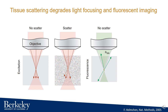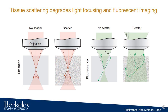Another example is fluorescence imaging. In this case, the light source becomes the fluorescent molecules inside of the tissue. If there is no tissue scattering, fluorescence emitted from these molecules can be collected efficiently by the objective lens. However, when the fluorescent molecules are inside of a scattering tissue, fluorescent light is scattered and cannot be collected as efficiently, so the signal-to-noise ratio of the fluorescence image is lower.